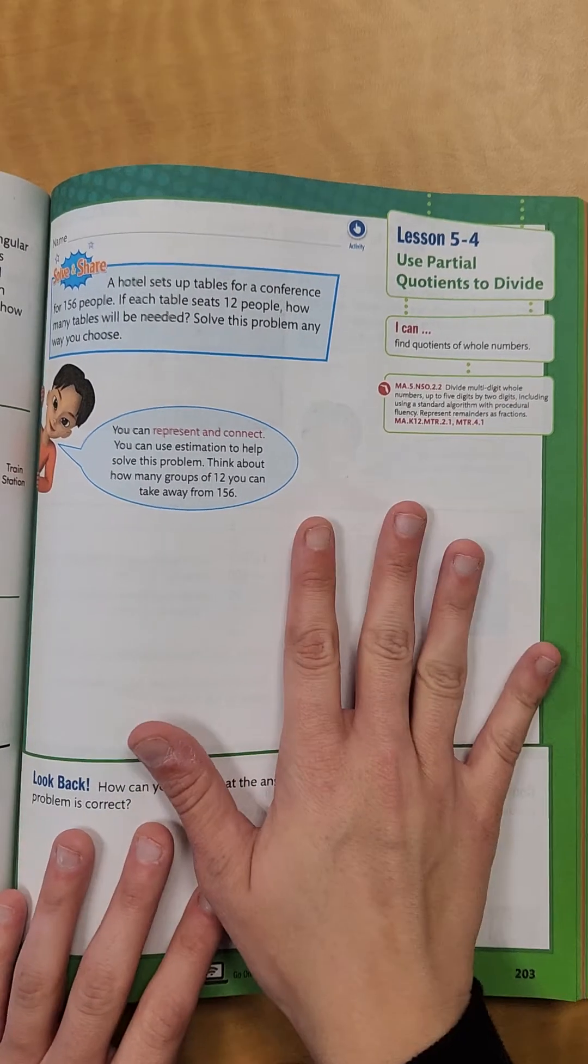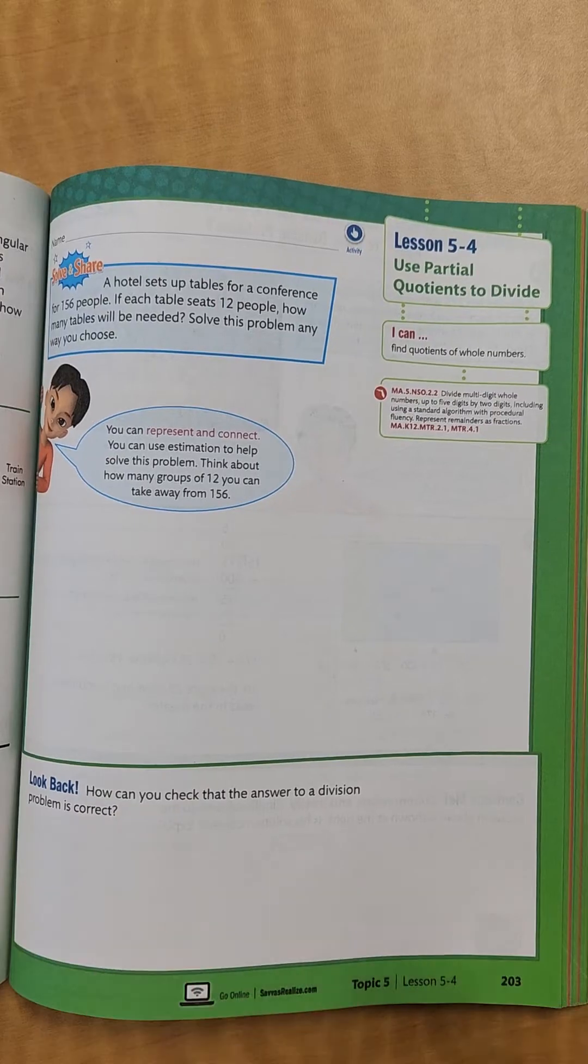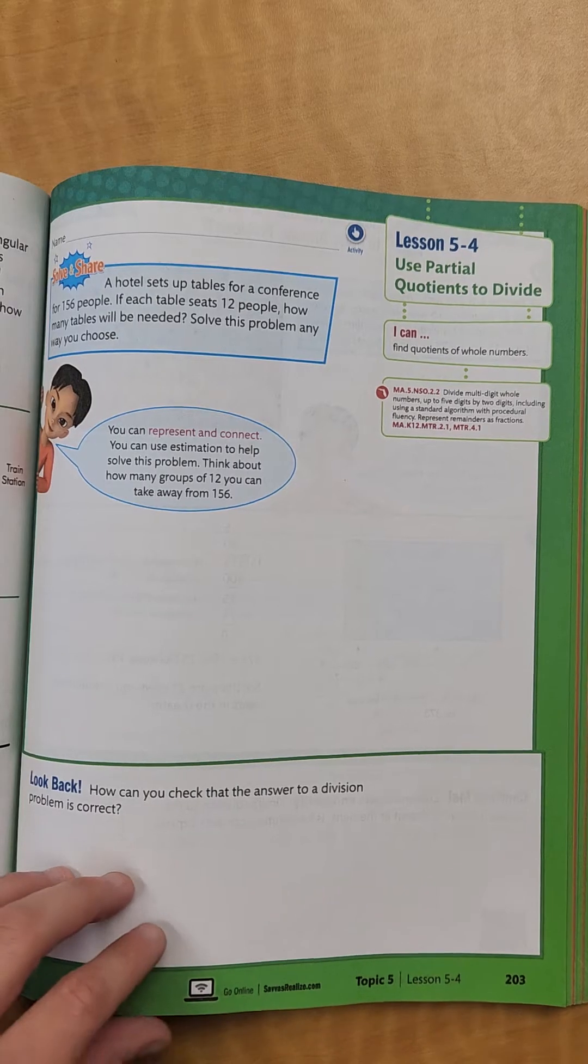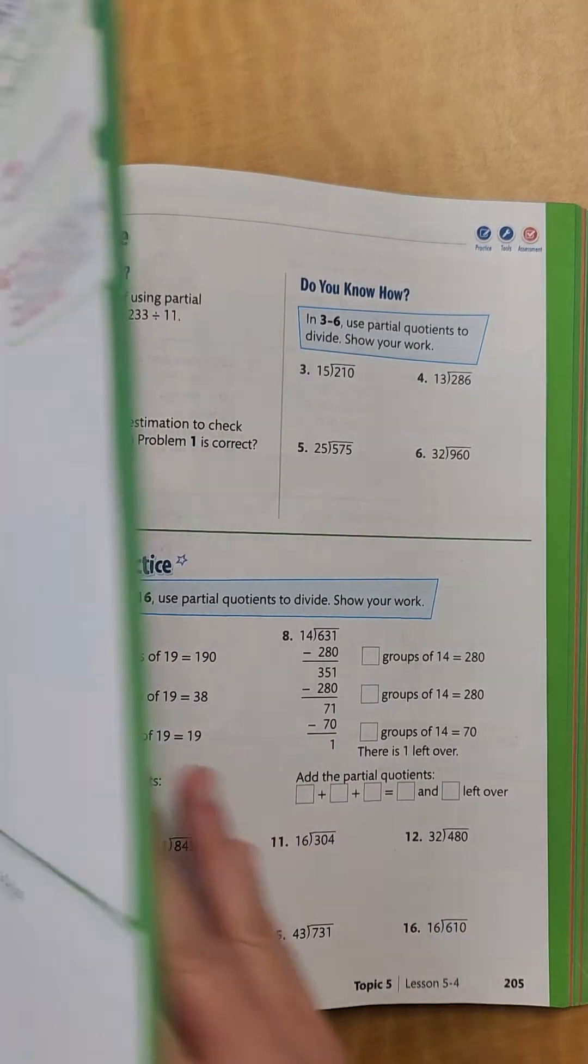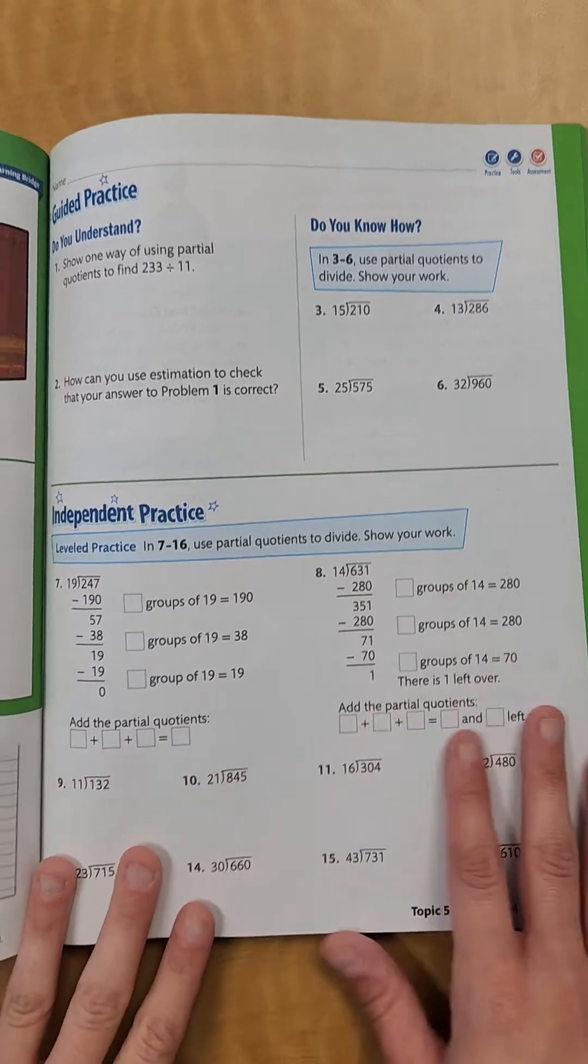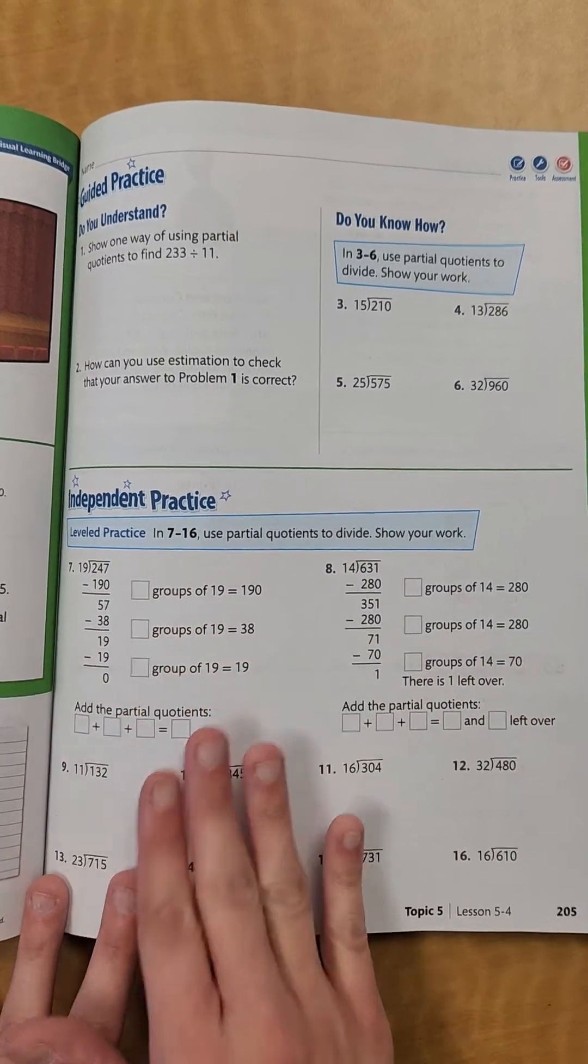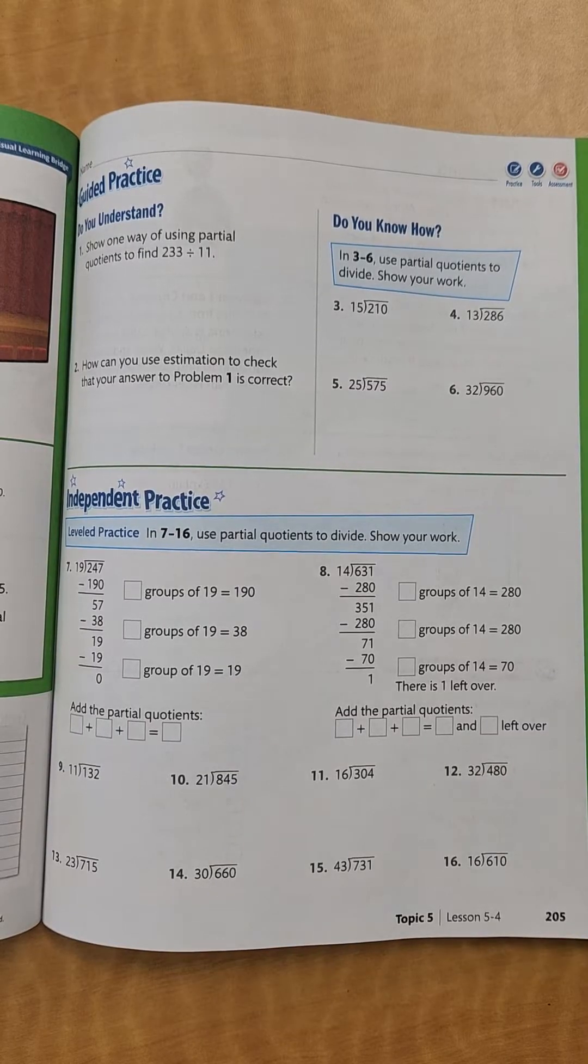So before we start, when I looked at this lesson, I felt like just jumping straight in was not really what we needed to do. So we're going to go to the independent practice first. I have this really neat example of how to do this right here. So we're going to do this first, and then we'll move on to the other problems.